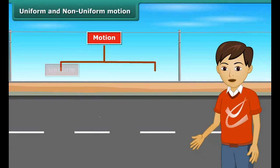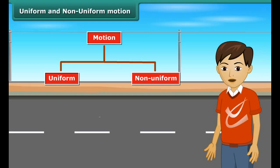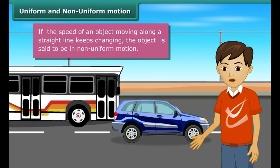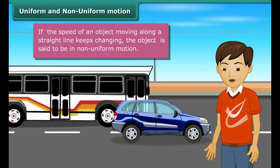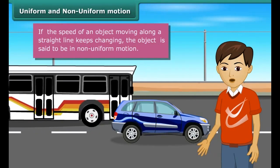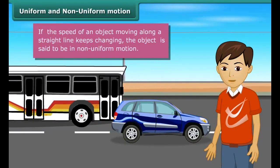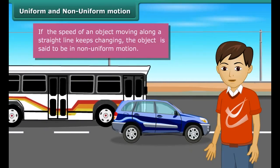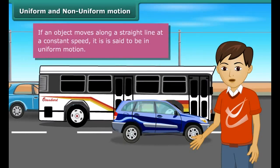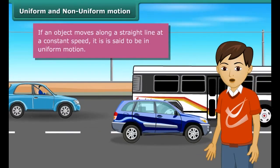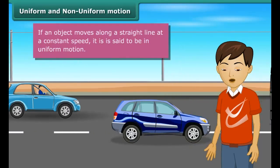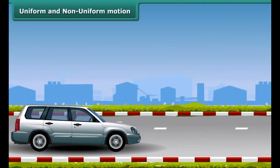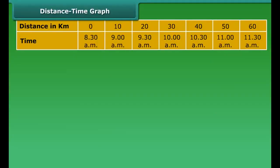Motion can be classified as uniform or non-uniform depending on the speed of an object. If the speed of an object moving along a straight line keeps changing, its motion is said to be non-uniform. A bus, for example, moves at varying speeds over varying stretches on its long route — hence its motion is non-uniform. If an object moves along a straight line at a constant speed, it is said to be in uniform motion. A car, for example, may maintain the same speed when it covers a short distance.